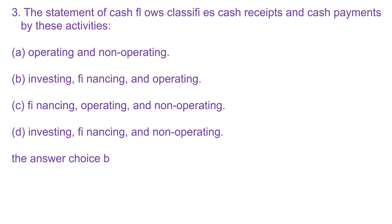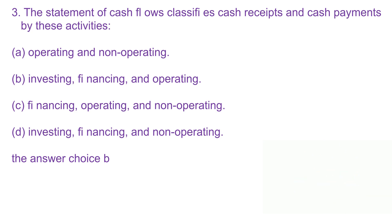Question 3. The statement of cash flows classifies cash receipts and cash payments by these activities. A. Operating and non-operating. B. Investing, financing, and operating. C. Financing, operating, and non-operating. D. Investing, financing, and non-operating. The answer is choice B.